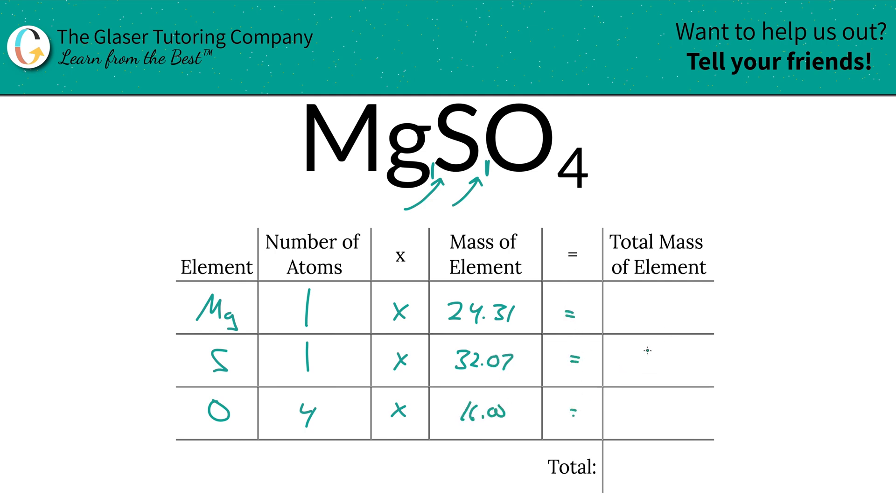And then to find the total mass of each element in the compound, just simply multiply the row across. So that's 24.31 units of mass for magnesium. Sulfur is going to be 32, that math was easy, right? And now, 4 times 16, what do you got? 64, right? 64.